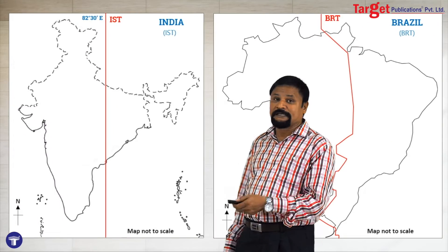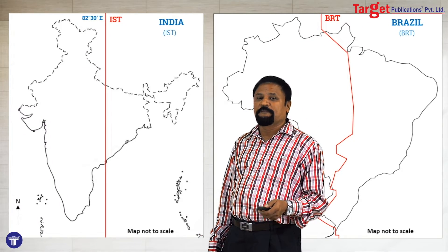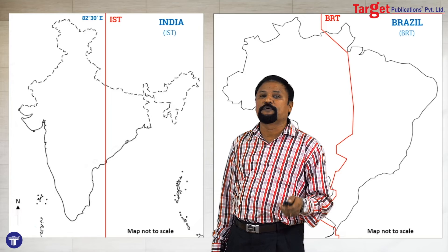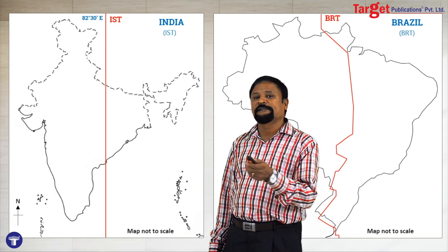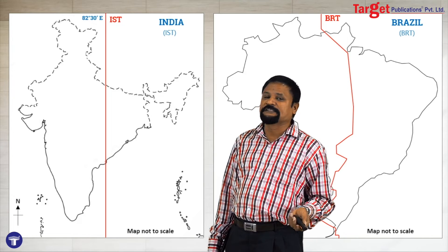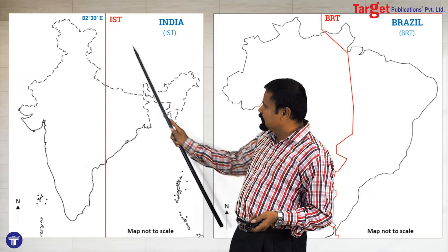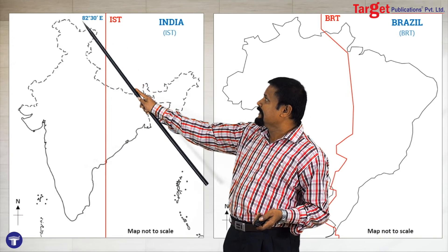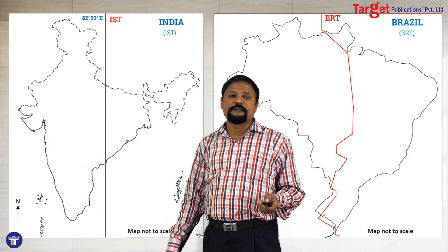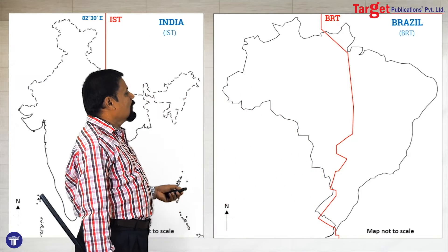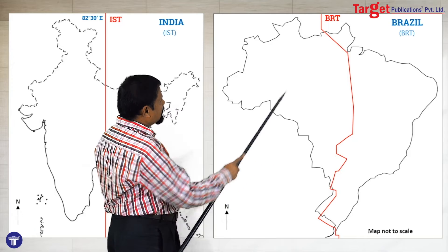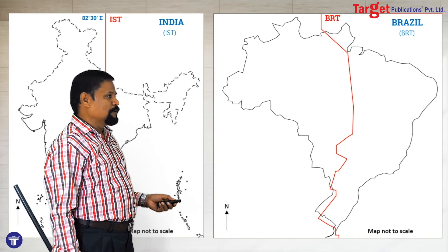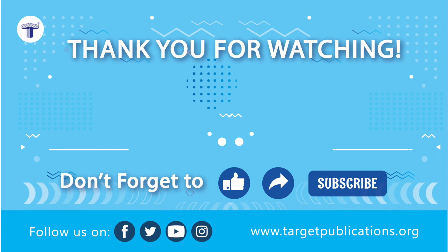If the question asks to mark the IST (Indian Standard Time) line or compare Indian Standard Time and Brazilian Standard Time, draw the India stencil and mark the IST line at 82.5 degrees East. Then draw Brazil's stencil and mark the BST (Brazilian Standard Time) line, and write a comparative note.